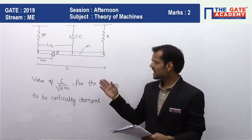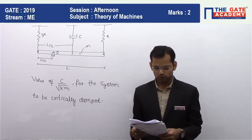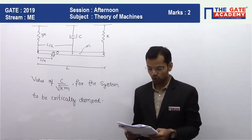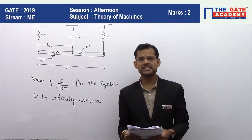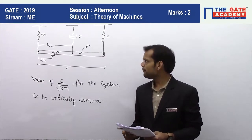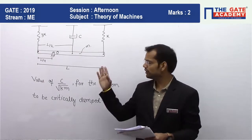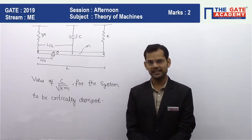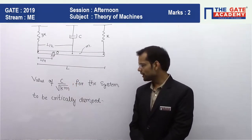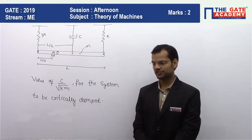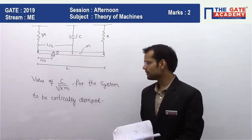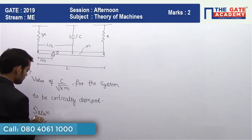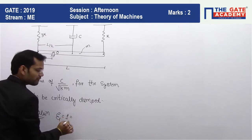This question was asked in GATE 2019. The language of the question is: a slender uniform rigid bar of mass M is hinged at O and supported by two springs with stiffness 3k and k, and a damper with damping coefficient C as shown in the figure. For the system to be critically damped, the value of C divided by root KM is to be determined.